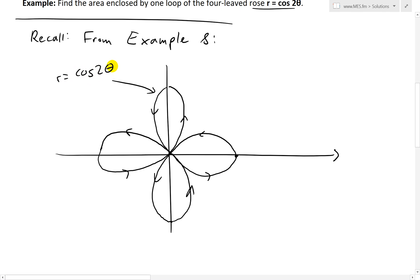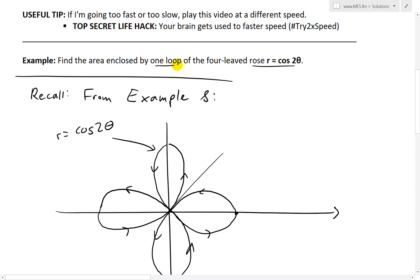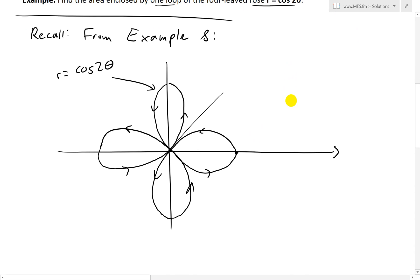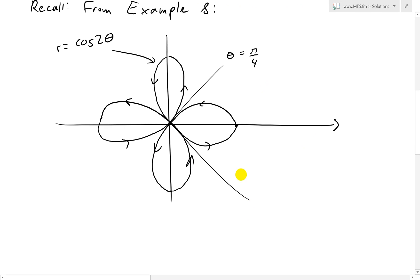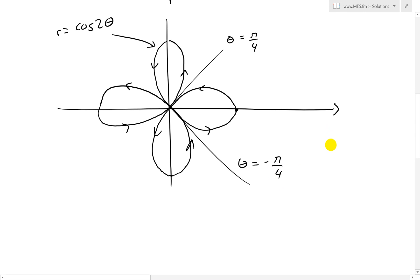Make sure to watch my earlier video to learn more about how I drew that. But also recall, because we want to find out one loop - these are all the same. Recall that this angle across, this is theta equals pi over 4. And in fact, this one right here is just, by symmetry and by my earlier video, theta equals negative pi over 4.